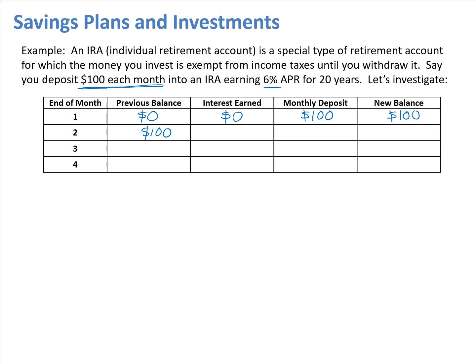Things get more interesting in the second month because now we have a balance of $100 and we can earn interest on it. Our interest rate is 6% annually, but we want interest for just a single month, so we divide by 12. Our monthly rate is 0.06 divided by 12. Multiplying that by the previous balance of $100 gives us $0.50 in interest. Then we make another $100 deposit, so our new balance is $200.50.